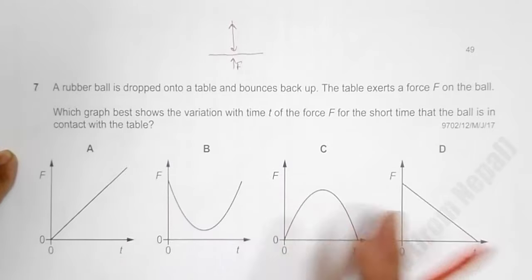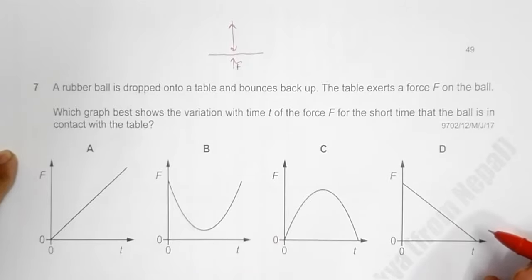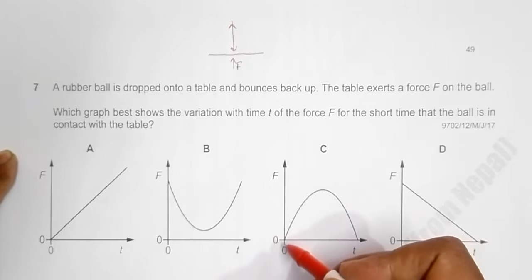Before the bounce the force is zero, and after the bounce finishes the force is again zero. So at the start force is zero and at the end force is zero. That is satisfied only by choice C.